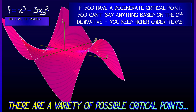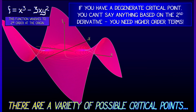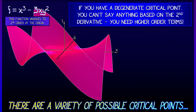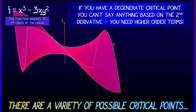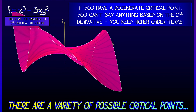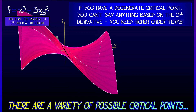You need higher order terms. Consider the following example: x cubed minus 3xy squared. That function vanishes to second order at the origin. There is no second derivative to examine.